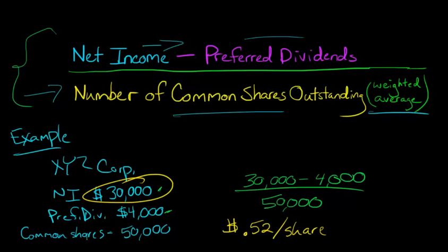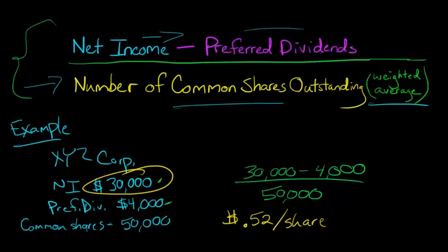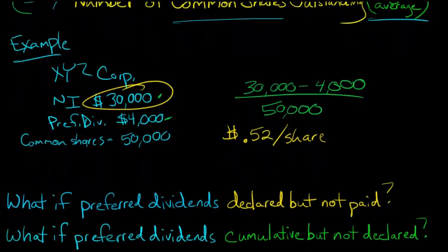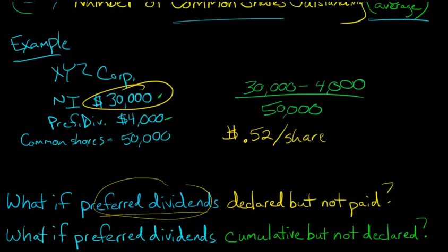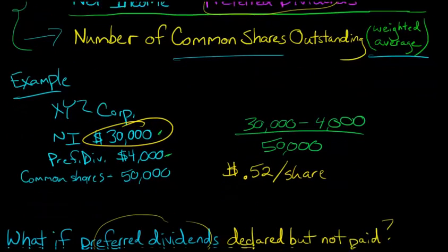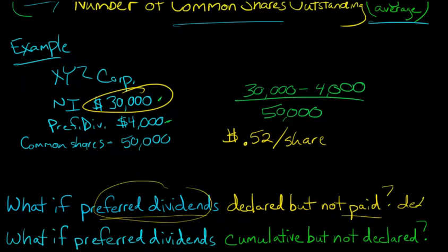Think of it this way: for every share you own, you really have a $0.52 share in those earnings. So now we can think about a couple of things that are a little more complex regarding these preferred dividends. What if the preferred dividends are declared but not paid? So the company has declared that they're going to pay a preferred dividend, but they haven't yet paid it. Do we go ahead and deduct it in calculating earnings per share, even if they haven't been paid? The answer is yes — we go ahead and deduct them.